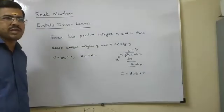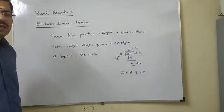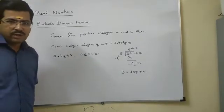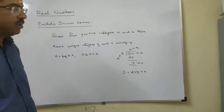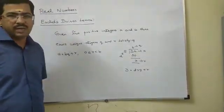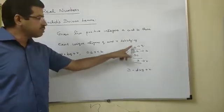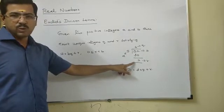What is the proven statement? In your lower classes, you have studied how to divide two numbers and check the result. For example, 32 and 5. Two numbers you take, 32 and 5. If you divide 32 by 5, you will get 6 times and the remainder is 2.